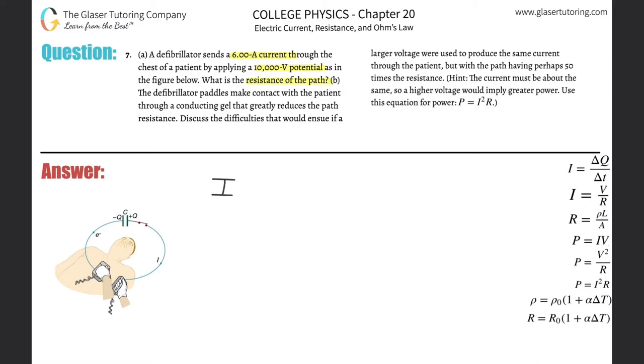So let's write down what we know. We know that the current here is going to be 6 amps. We also know the voltage or the potential between the two paddles is going to be 10,000 volts. And what we're being asked to solve for is the resistance.